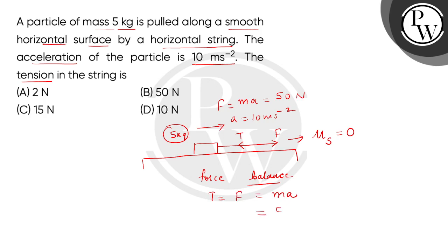This answer is 5 multiplied by 10. It means this is 50 newton. So correct option for the tension in the string is option B. Thank you.